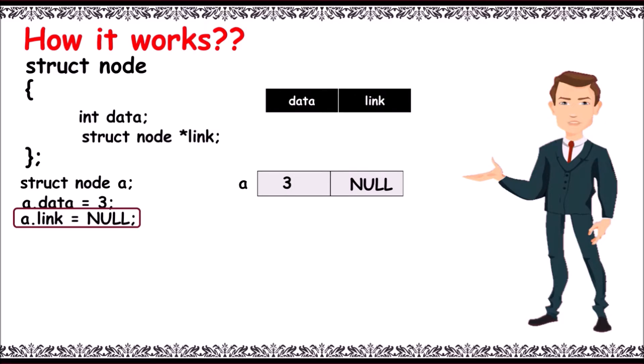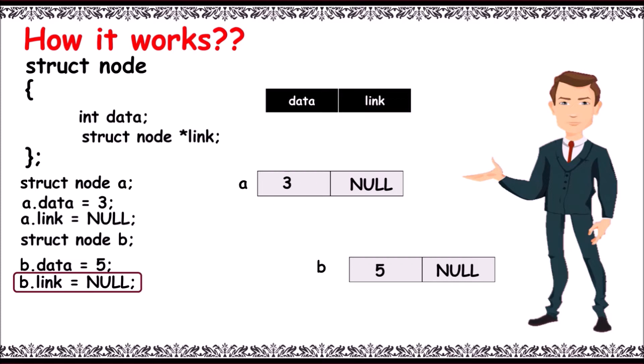Struct node b with two empty fields. Here I store 5 to b.data and null to b.link. The important aspect is: I store the address of b in a.link. Storing the address of b in a.link field.